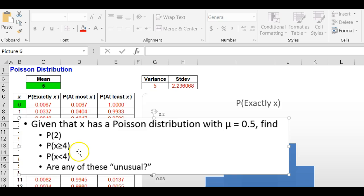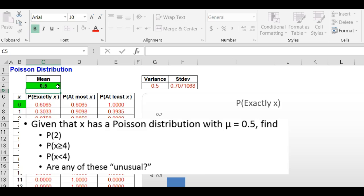Finally, let's look at this question. Given that a Poisson distribution with a mean of 0.5, find the following. I've got to change the mean to 0.5. Hit the enter button.